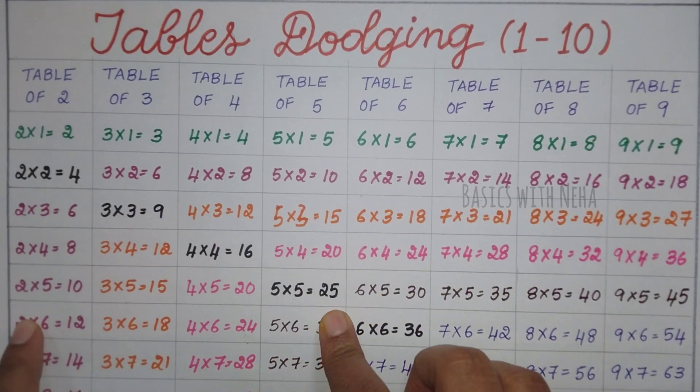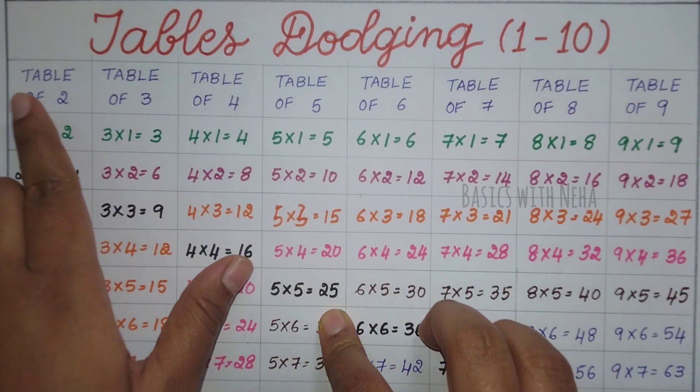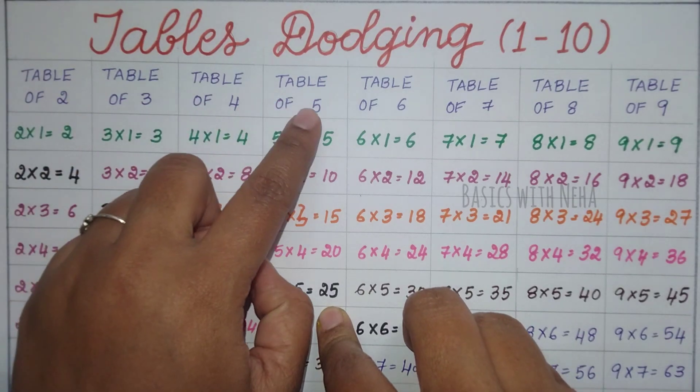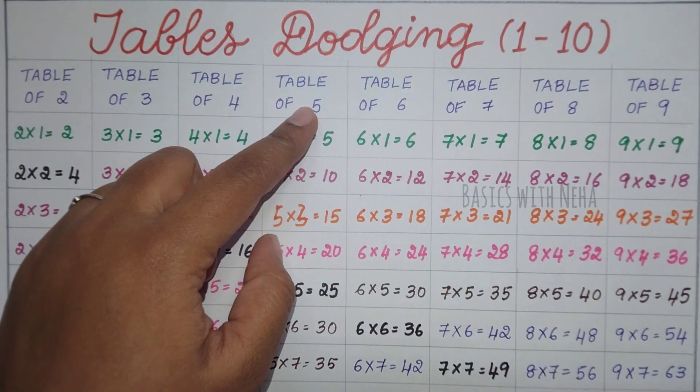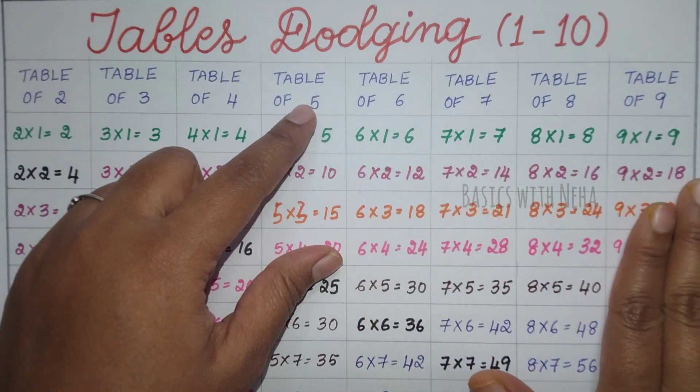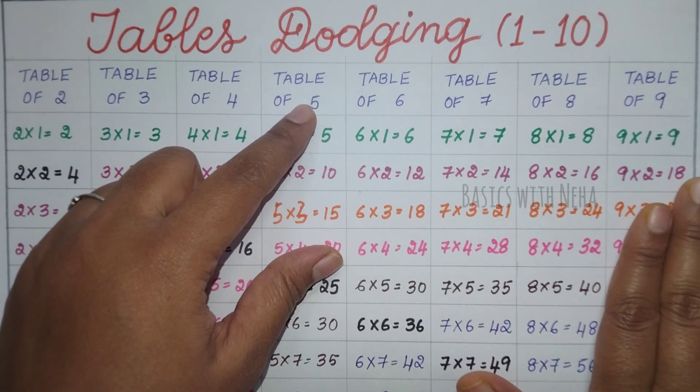So it is better for a child to know tables of 2, 3, 4, 5 well in advance in order to dodge the remaining tables till 10.